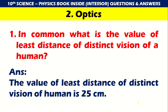Chapter 2: Optics. What is the value of the least distance of distinct vision of a human? The value of the least distance of distinct vision of a human is 25 cm. This is very important.